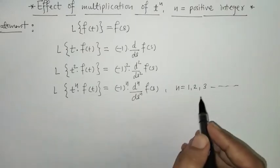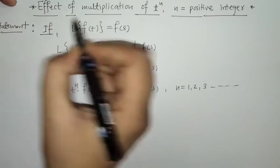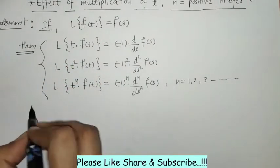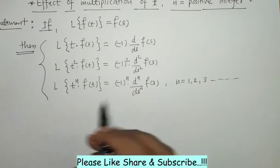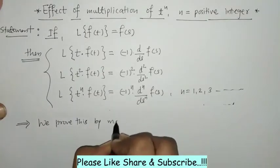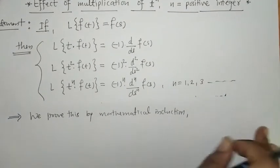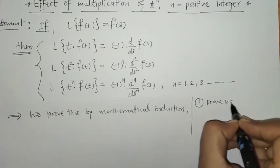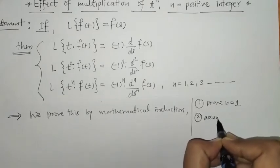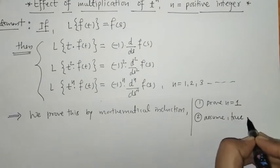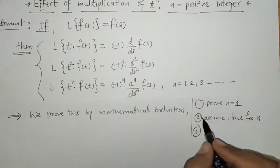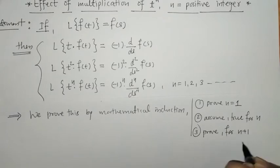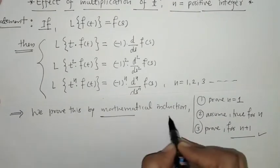Now we have to prove this statement. We are given that the Laplace of f(t) is F(s), and we will prove this property by mathematical induction. In mathematical induction, we first prove the statement for n equals 1, then assume it is true for n, and using that assumption we prove the statement for n plus 1.